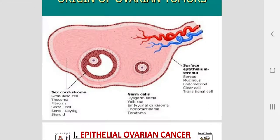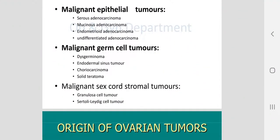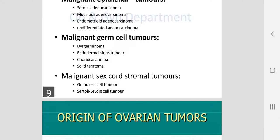Germ cell tumors are classified into dysgerminoma, endodermal sinus tumor (yolk sac tumor), choriocarcinoma, and teratoma in its two types. Sex cord stromal tumors include granulosa cell tumor, theca cell tumor, fibroma, fibrosarcoma, and Sertoli-Leydig cell tumor. Fibroma is benign. This is an illustration of the three types of malignant ovarian tumors.